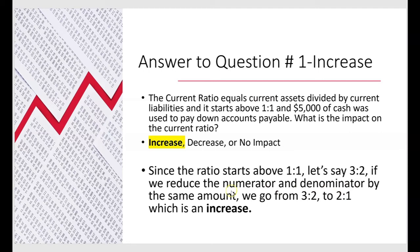If we reduce the numerator and denominator by the same amount — take one away from both sides — we go from three to two down to two to one, or from 3/2 to 2/1. We started at three to two, which is 1.5 to one, and we end up at two to one. That's an increase in the ratio. This will happen with any ratio that starts above one to one: if you take away the same amount from both numerator and denominator, the ratio will increase.